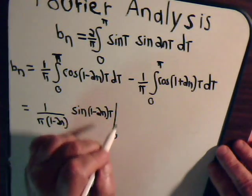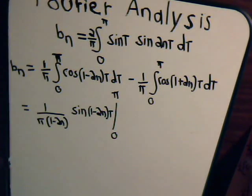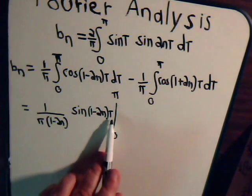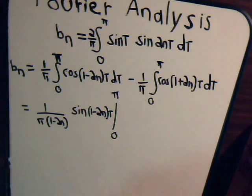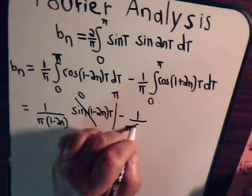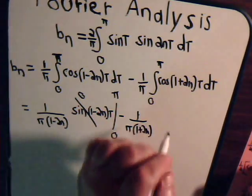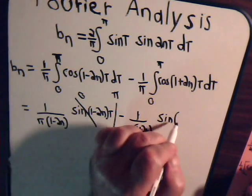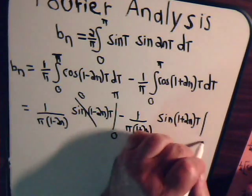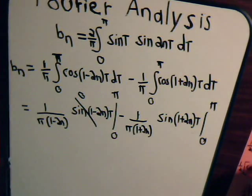T goes from zero to pi. So clearly this is zero. We substitute pi here for t, that's zero. Put zero in for t, the sine of zero is zero. And certainly this is going to be zero too. We have this times the sine of one plus two n t, t goes from zero to pi, and this will be zero too.